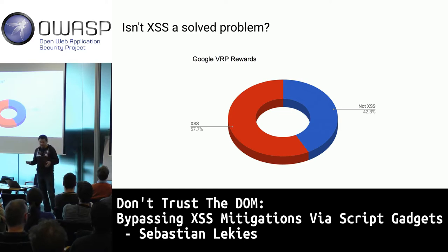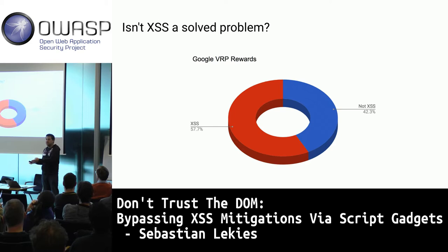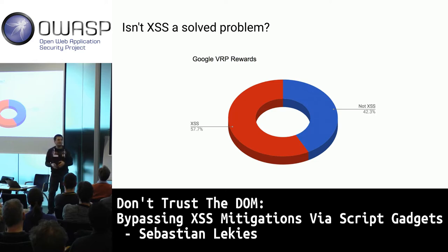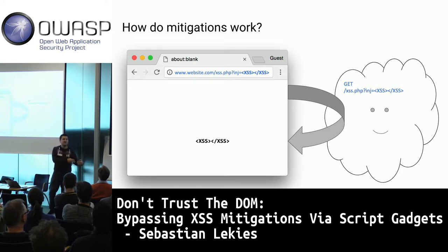In recent years, a lot of XSS mitigations were introduced. We have ideas how to prevent bugs, but we often can't prevent their existence entirely. So instead of focusing on bugs, let's focus on the attacks. An XSS mitigation blocks the attack instead of preventing the vulnerability.